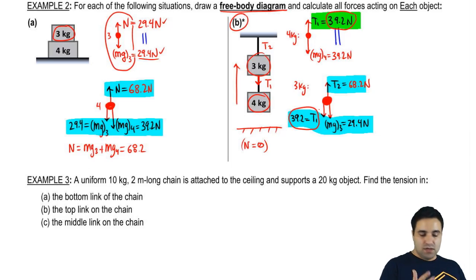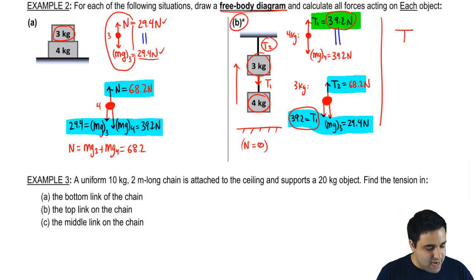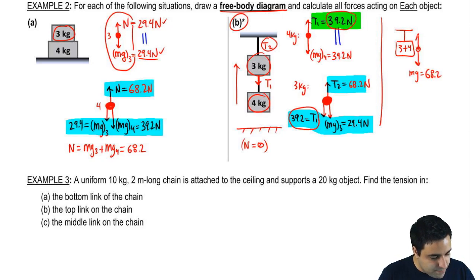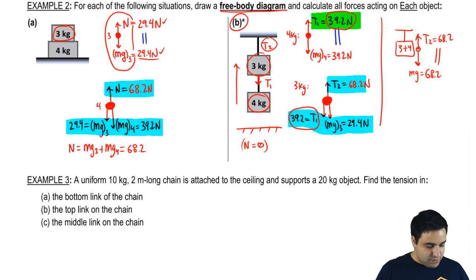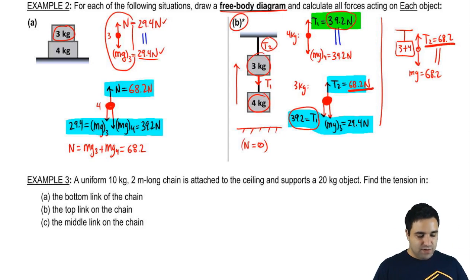That's why I had to work out the four first — to find T1, which I then plugged in. You start from the simplest object at the edge and work your way up. If all you wanted to know was T2, you could just combine the masses: 3 plus 4 is 7 kilograms, and mg of 7 times 9.8 is 68.2 newtons, so T2 equals 68.2. You can always combine objects for the outermost tension.